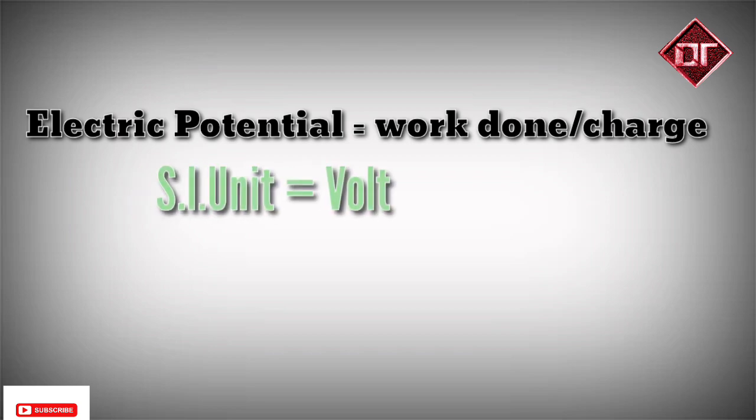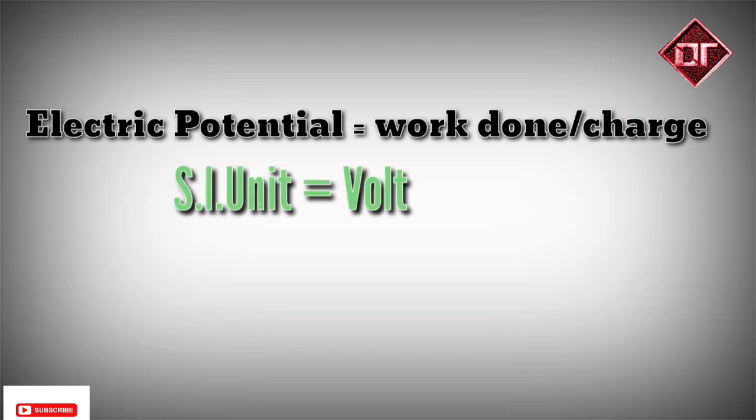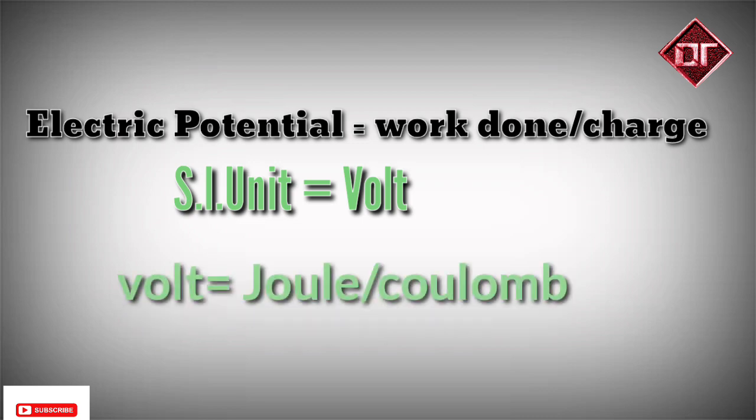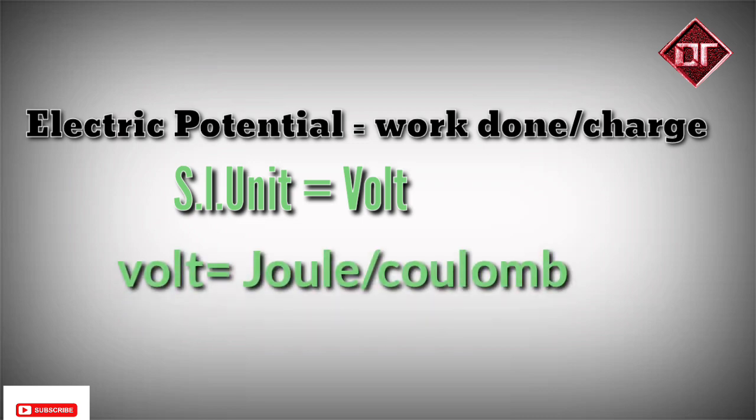So electric potential is equal to work done divided by charge, and its unit is 1 volt. We can write that 1 volt is equal to joule per coulomb. One coulomb of charge corresponds to 1 volt.